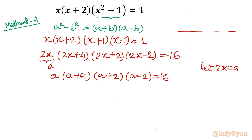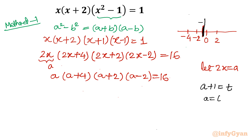Now if we draw a number line, we have a equal to 0, plus 2, and minus 2, and then (a plus 4) means minus 4. The center point is at minus 1, so I will give a substitution: let a plus 1 equal to t. That means a equals t minus 1. Then a plus 4 will be t plus 3, a plus 2 will be t plus 1, and a minus 2 will be t minus 3.